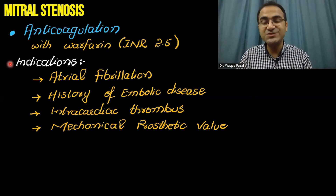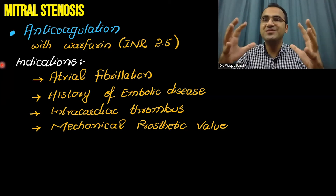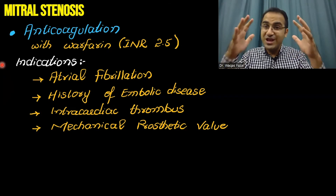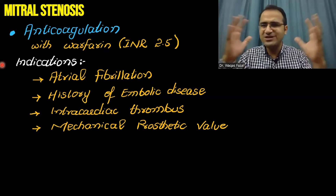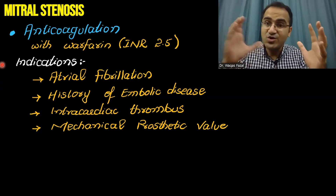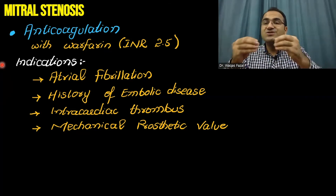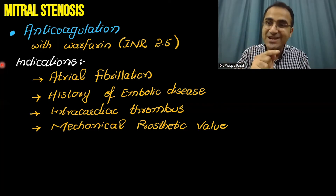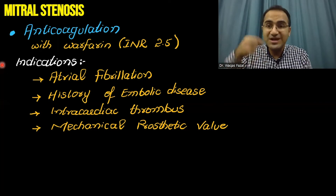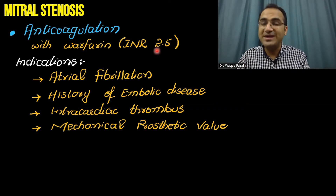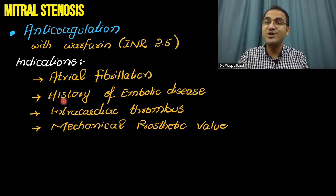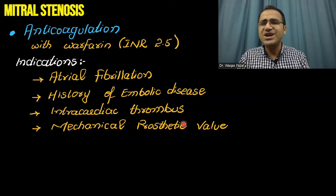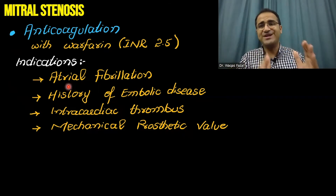These patients with mitral stenosis have an enlarged atrium causing irregular currents — atrial fibrillation — which makes blood more turbulent, leading to clot formation. Those clots can enter the brain and cause stroke. So you give anticoagulation with warfarin and maintain an INR of 2.5. Anticoagulation is indicated if there is atrial fibrillation, history of embolic disease, intracardiac thrombus, or a mechanical prosthetic valve.